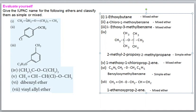Now, evaluate yourself: give the IUPAC name for the following compounds and classify them as simple or mixed ethers. In compound 1, the groups on both sides of oxygen are different - mixed ether. Compounds 2 and 3 are also mixed. Compound 4 has identical groups on both sides - simple ether. Compound 5 is mixed. Compound 6 (dibenzyl ether) has two benzyl groups - simple ether. Compound 7 (vinyl allyl ether) has different groups - mixed ether. So compounds 4 and 6 are simple ethers; the rest are mixed.